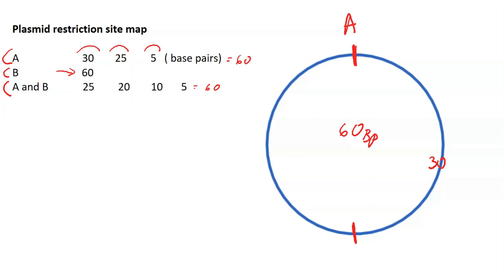Then we have to cut the other fragment into 25 and 5. We'll place the next restriction site here. That's cleaved by enzyme A. This is 25 base pairs, and what we're left with is 5 base pairs. Now we've mapped enzyme A, where it cleaves this particular plasmid.